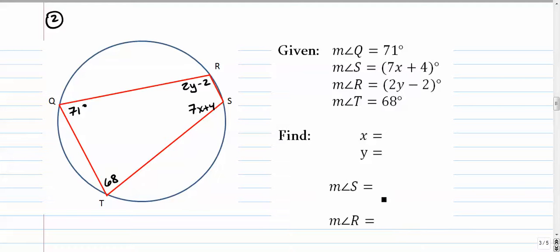And to do that, we're simply going to use the idea that opposite angles inside inscribed quadrilaterals, opposite angles are supplementary. So these two, Q and angle S, add up to 180. So I'll write that equation down here. 71 plus 7x plus 4 equals 180.